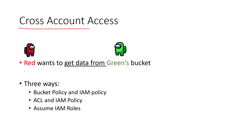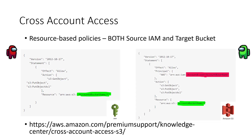I will use color coding throughout my presentation. Red and green are basically account names. In my case, red wants to get some data from the green bucket — that is a cross-account scenario because red and green are two different accounts. There are three ways to do so, and I recommend the first way, which is the bucket policy and IAM policy — the easiest and most common. You can use other ways, but that is just my recommendation.